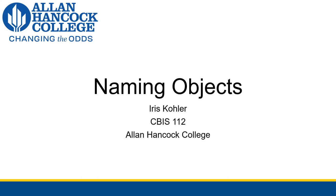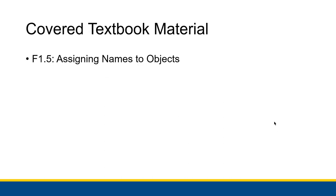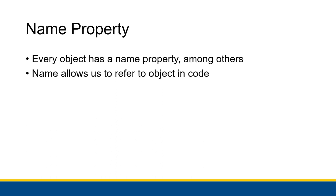In this video we're going to talk about the idea of naming objects. This will cover F1.5 in the textbook: assigning names to objects. We talked about object properties before, and one of the properties that every object is going to have is a name. The name is really important because that's what allows us to refer to the object when we're actually doing code.